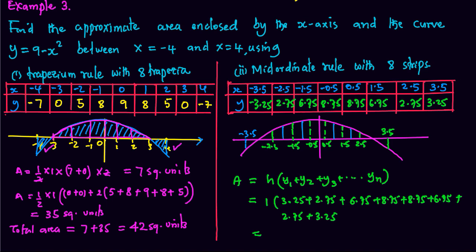So when we add this, we get the area that we require. This gives us an area of 43 square units. So we can see a small variation between the area obtained by trapezium rule and the area obtained by mid-ordinates rule.